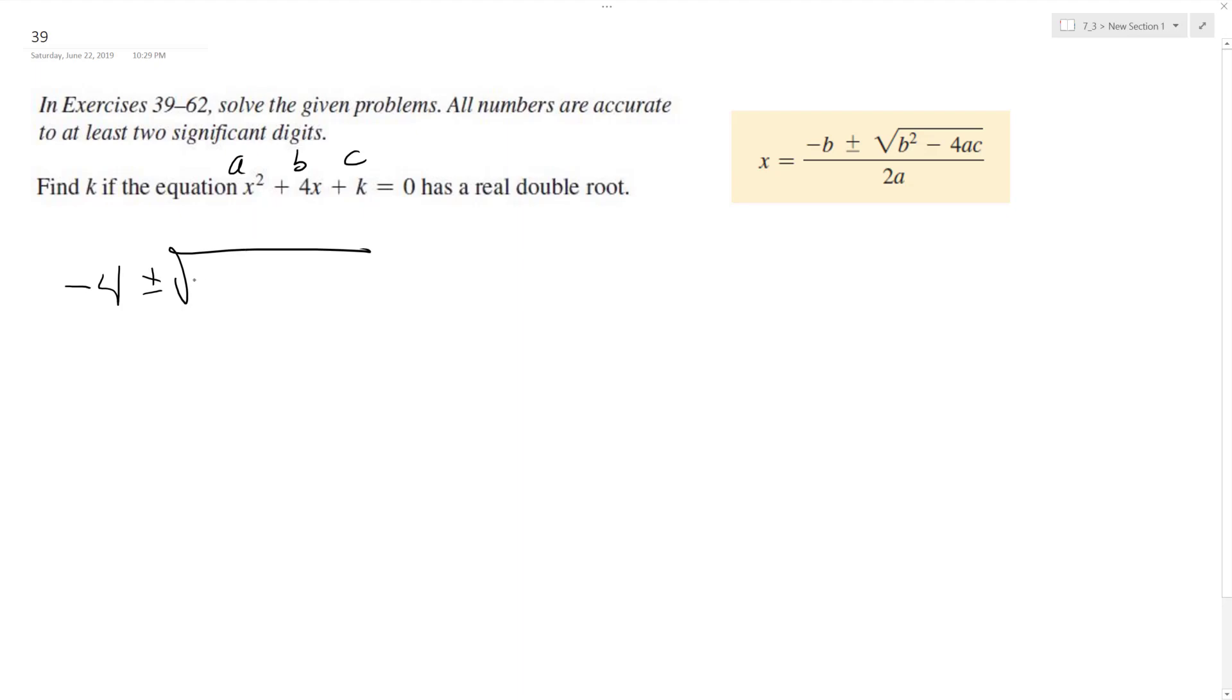So we have 16, which is b squared, minus 4 times a, which is 1, times c, which is going to be k.